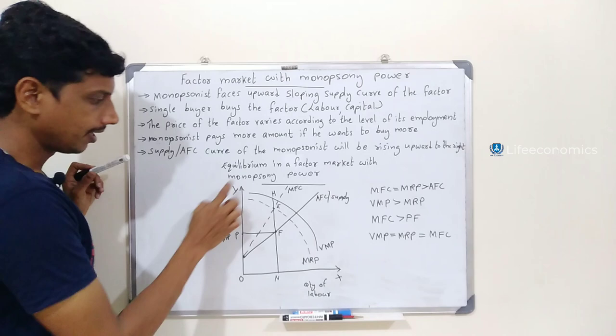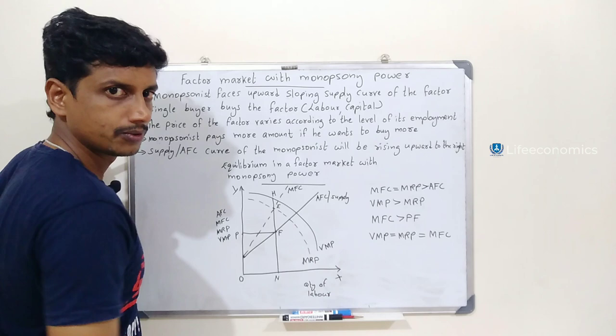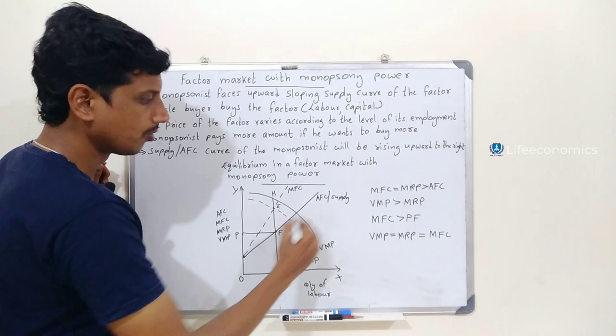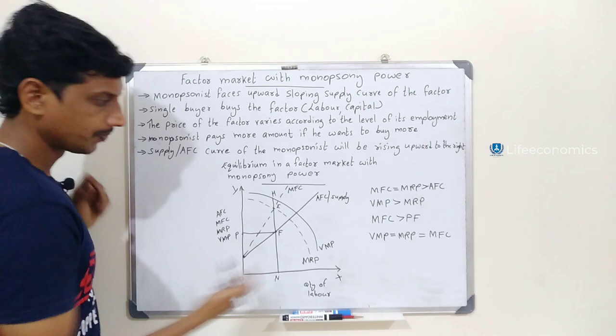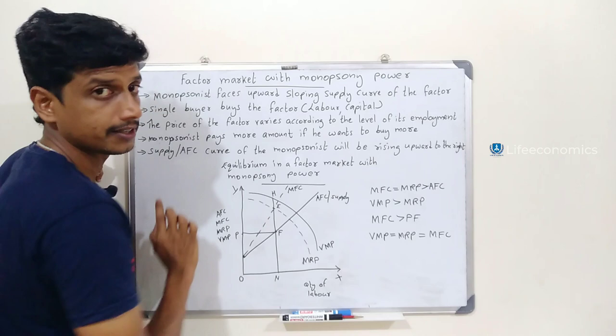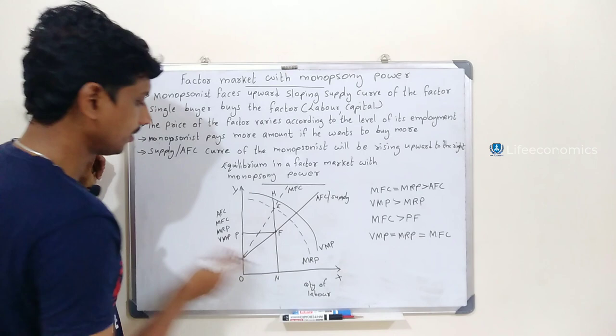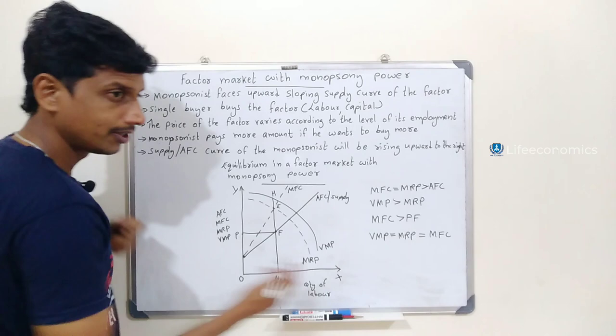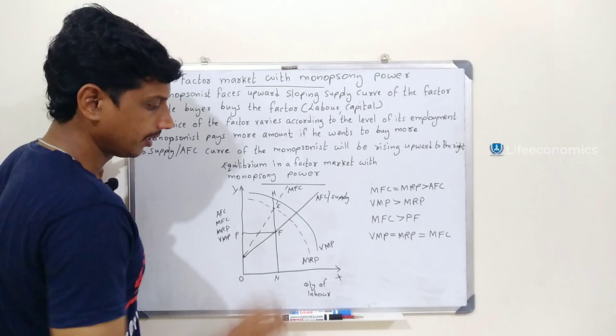On the Y axis we plot cost and revenue values. The X axis represents the Quantity of Labor. The Average Factor Cost is AFC, the Marginal Factor Cost MFC lies a little above it, and then we have VMP — Value of Marginal Product — and MRP — Marginal Revenue Product. There are several curves in this diagram.